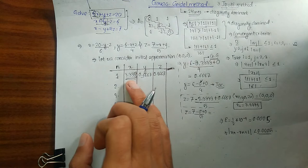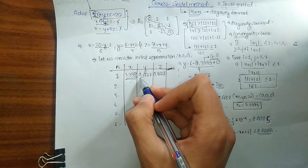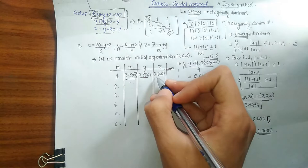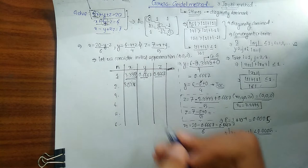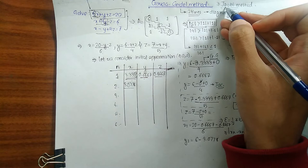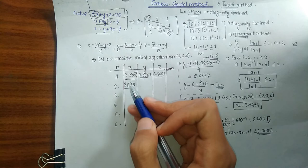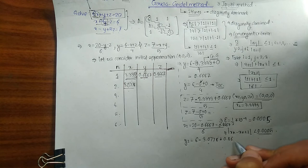For the second iteration, x₂ = (20 − 0.6667 − 0.8667) / 6 = 3.0778. For y₂ in the Gauss-Seidel method, we use the latest x₂ = 3.0778. In the Jacobi method we would use the previous x₁ = 3.3333 only — that remains the key difference between the two methods.